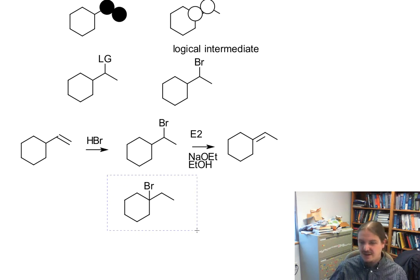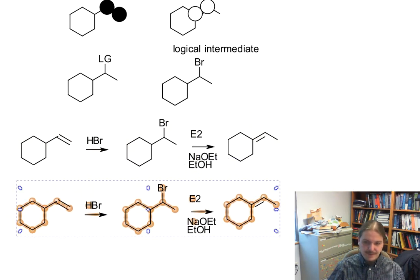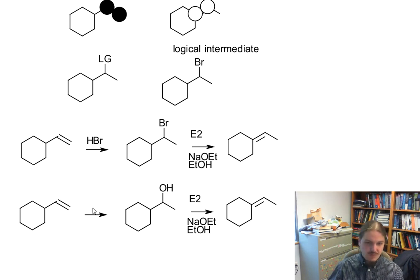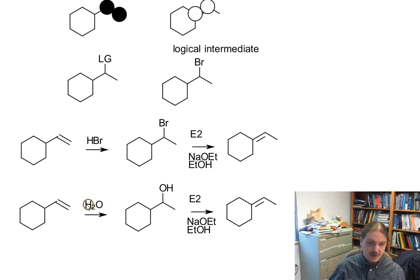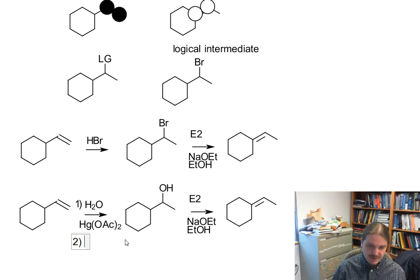So if we can do that, that is a chance that we might take. We do know, however, that there is a way — if we switch bromine for an alcohol — we can use an oxymercuriation reaction followed by demercuriation to make that alcohol, and then we can change how we do our elimination.